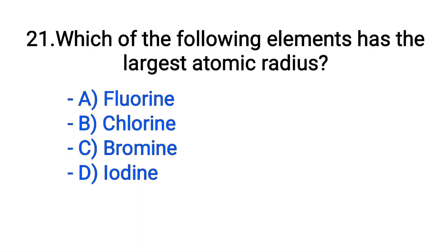Question number 21. Which of the following elements has the largest atomic radius? Option A: Fluorine. B: Chlorine. C: Bromine. D: Iodine. The correct answer is option D, Iodine.